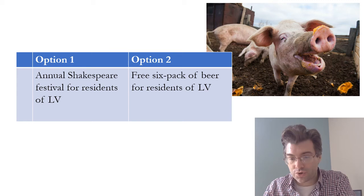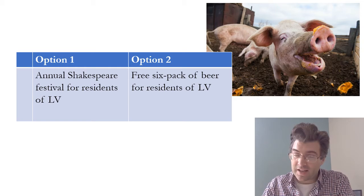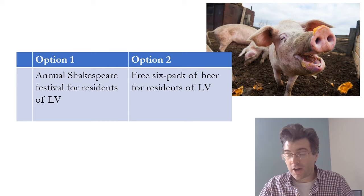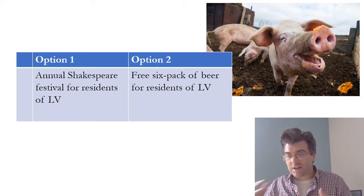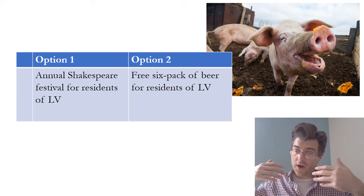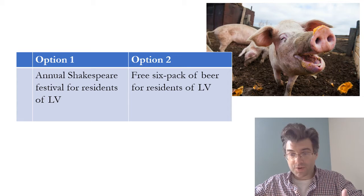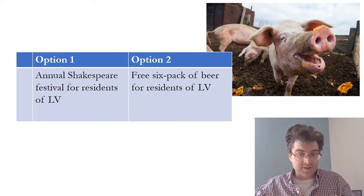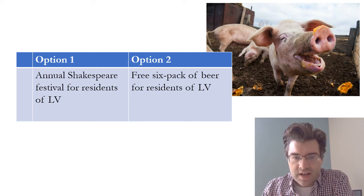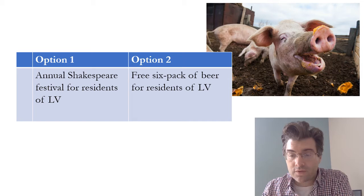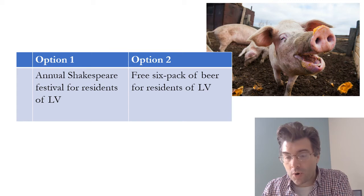That view is controversial because many people have argued that Mill's position ends up being elitist — it favors certain pleasures over others in an unjustified way. We can't easily articulate what the standards are for 'sufficient experience' with a pleasure to determine who deserves a vote and who doesn't within this test. Those are some of the reasons people have given for why the 'informed' part of the informed preference test is questionable.